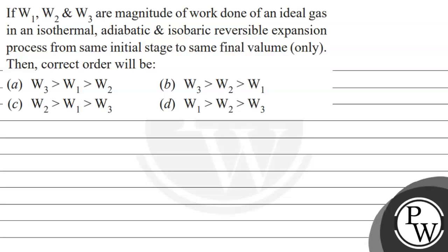Hello. Let's read this question. If W1, W2 and W3 are the magnitudes of work done of an ideal gas in an isothermal, adiabatic and isobaric reversible expansion process from the same initial state to the same final volume, then the correct order will be — and these are the following options given to us.